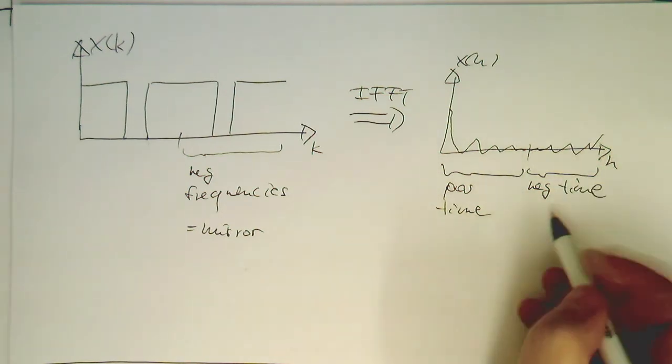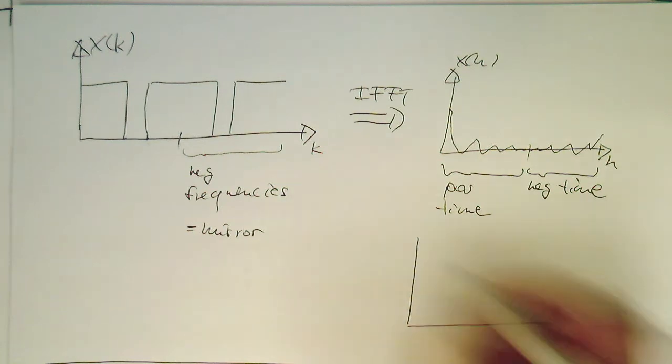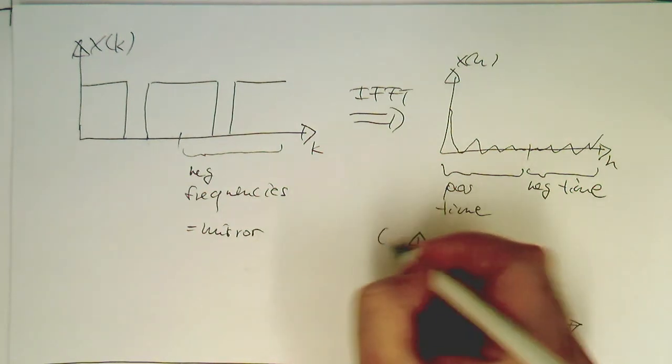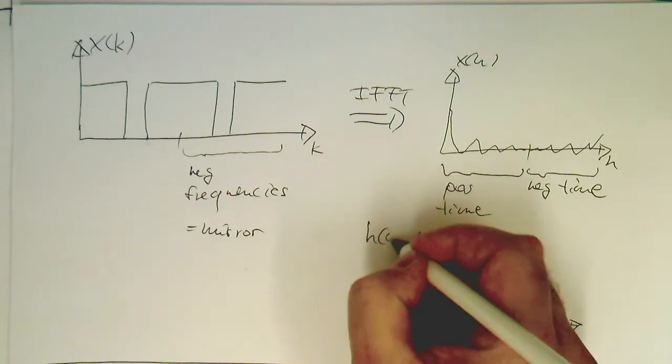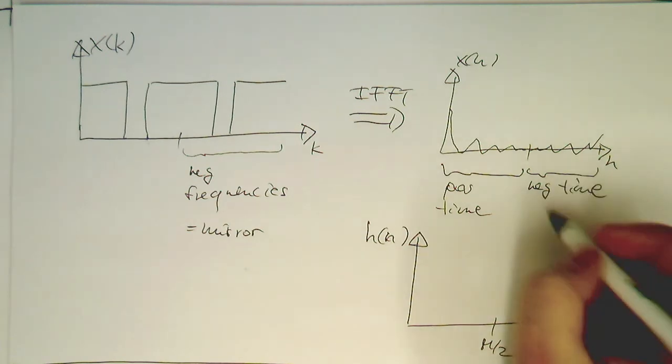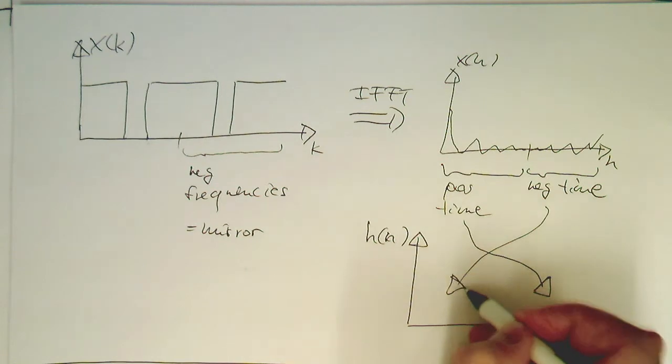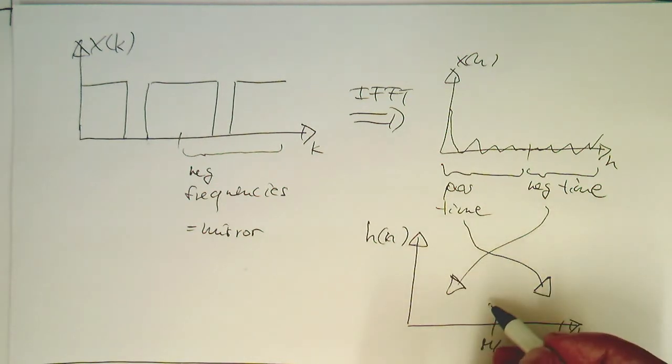Yeah, so we need to reshuffle these two a bit here. So if we want to create our impulse response out of this or our filter coefficients here. So if we call this here h of n. Then we would like to move the negative time. This is here half. This is m half. And this is m. Then we want to move the negative time actually in this section here. And we would like to move the positive time into this section here. And with that then we have also solved our shift into positive time.